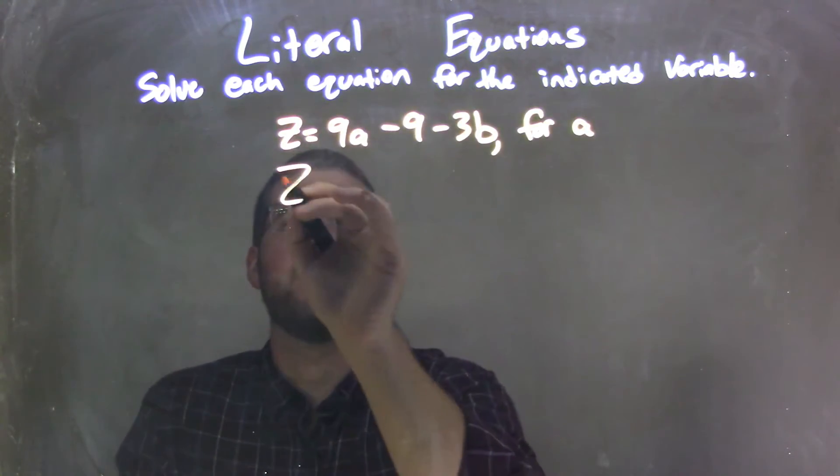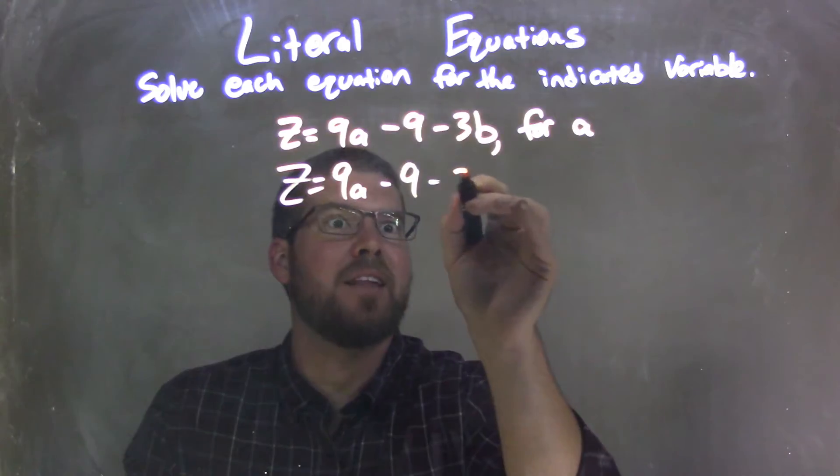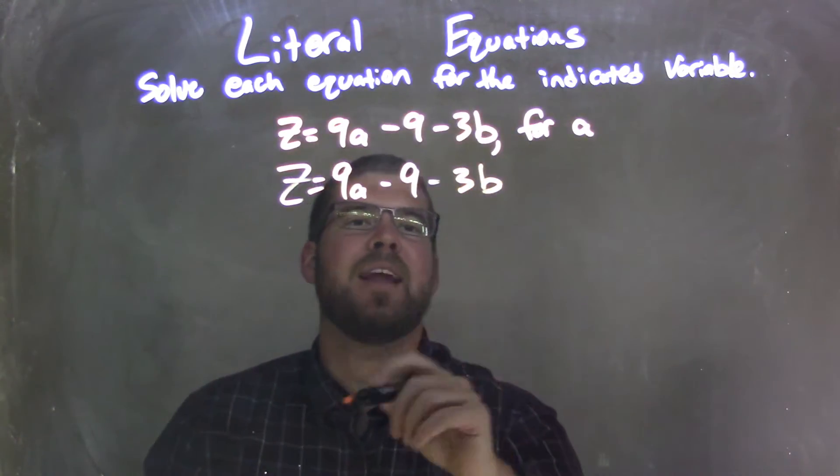So I'm going to rewrite my equation. Let's make sure I keep my 9s and my a separated because they do look alike. So I have 9a minus 9 minus 3b.